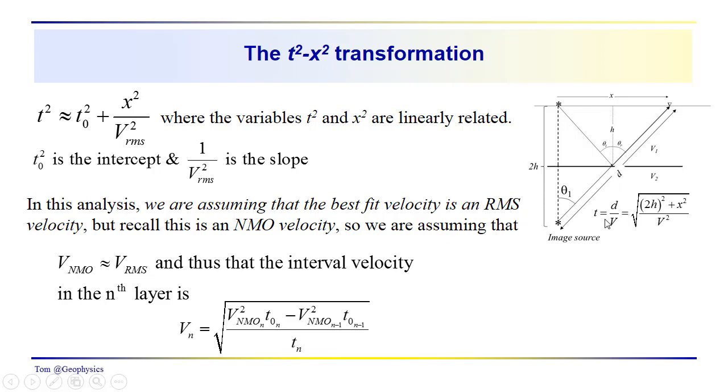Remember that we came up with this relationship very simply when we were talking about ray trace theory. The time basically is equal to the distance traveled, the total distance represented as one side of a right triangle, over the velocity. Here we're dealing with a single layer case, this would be V1, and we'd have 2h over V. The quantity squared 2h over V is just your T0, so we have T0 squared plus x squared over V squared. When we square both sides of this relationship we get t squared is equal to T0 squared plus x squared over V RMS squared.